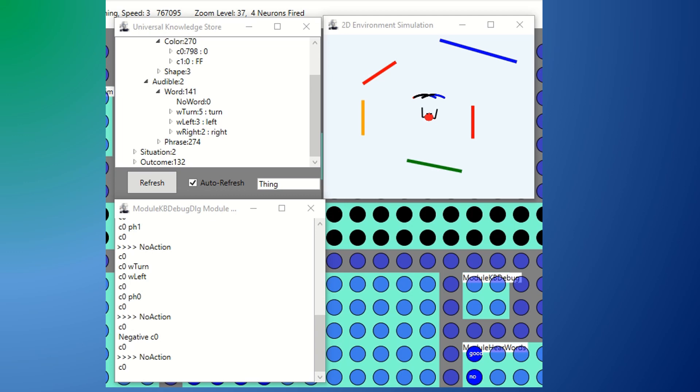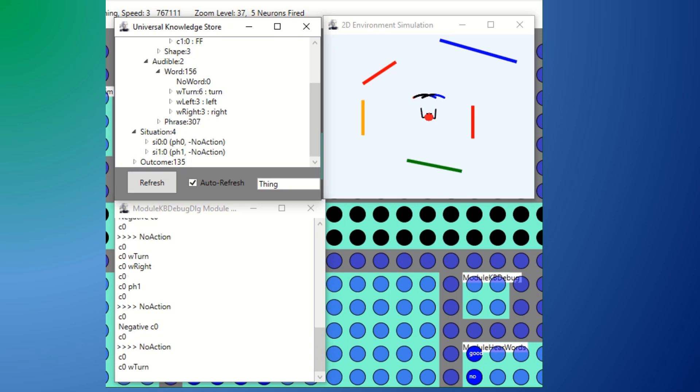When training is enabled, the world simulator analyzes each action and responds with an appropriate positive or negative outcome. Sally initially takes no action and receives a negative outcome because doing nothing in response to the turn right phrase is incorrect. She builds a situation thing to record the input state, the action she tried, and the outcome. Sally tries out different actions as she receives feedback from the simulator.